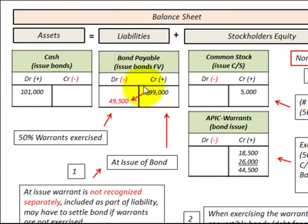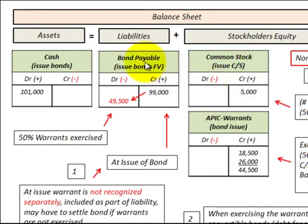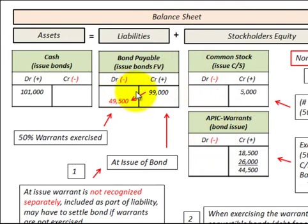We reduce our debt or liability by an amount and increase our equity account by that amount. That's in contrast to detachable warrants, where at exercise we recognized a cash receipt and allocated the equity portion. With non-detachable warrants, we reduce our liability and transfer it to equity. With detachable warrants, the liability was not affected at exercise — it only involved the warrants between a cash account and the equity account, opposed to non-detachable warrants where we reduce the debt amount and transfer it into equity upon exercise. That's the summary between non-detachable and detachable stock warrants when attached to a debt security, namely bonds.